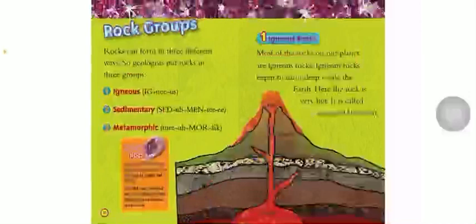Rock groups. Rocks can form in three different ways, so geologists put the rocks in three groups: igneous, sedimentary, metamorphic. Igneous rock: rocks that are formed by the cooling of super hot rocks. Magma: hot melted rock that forms inside the earth and comes out as lava.